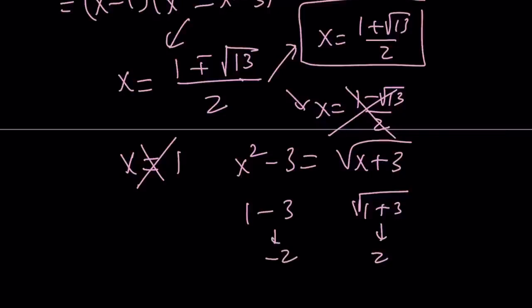If you substitute 1 on both sides, you get 1 minus 3 and the square root of 1 plus 3. This is 2. This is negative 2. So that problem is eliminated. That issue is eliminated when we square both sides because negative 2 squared and 2 squared are equal, but negative 2 and 2 are not equal. Make sense? So those are called extraneous solutions.